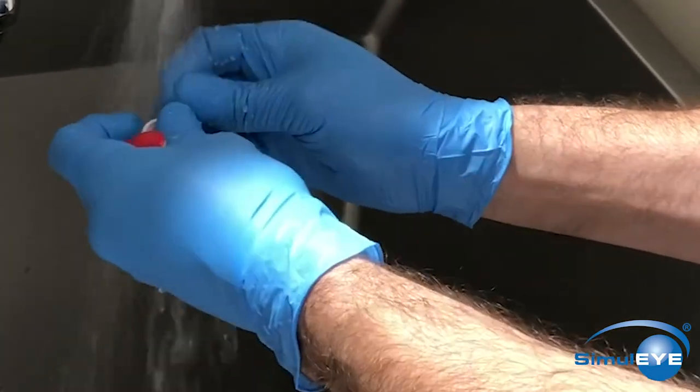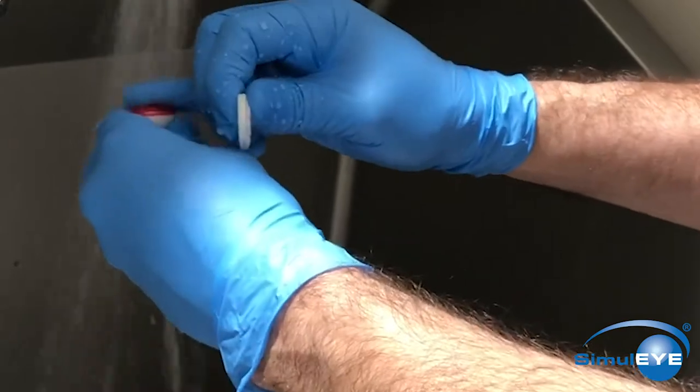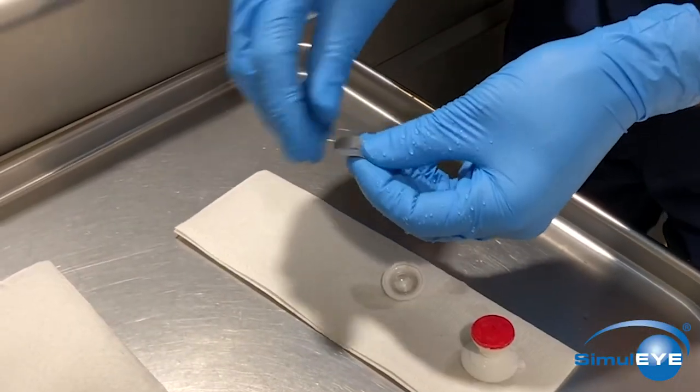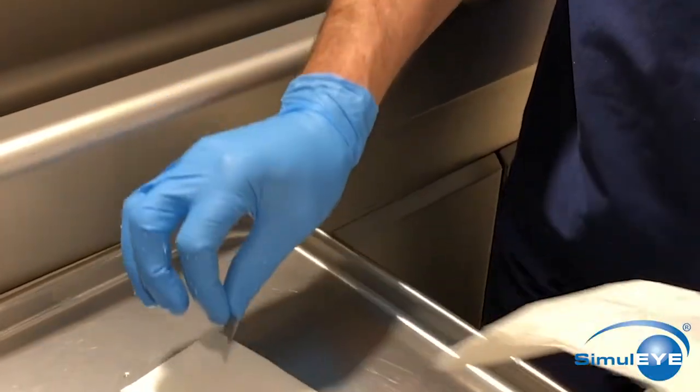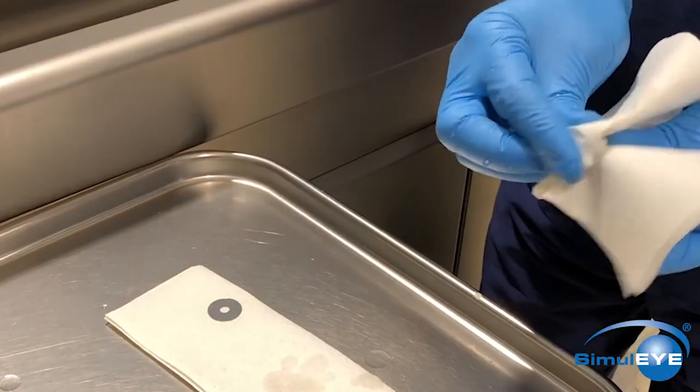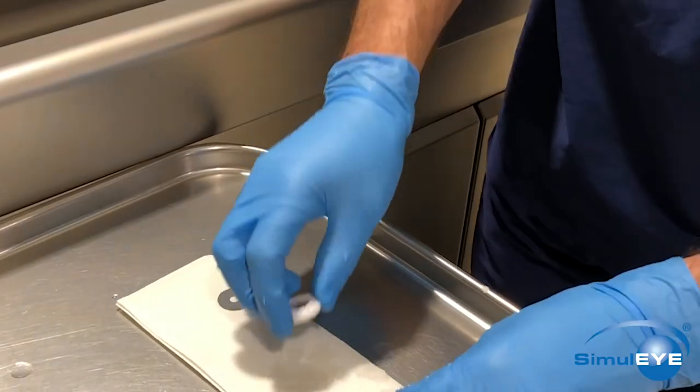Rinse them well, and then you can allow the parts to air dry, or you can dry them by hand. Once they're dry, they're ready to be reassembled, and the eye can be stored for later use.